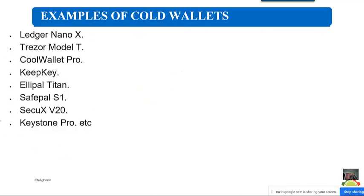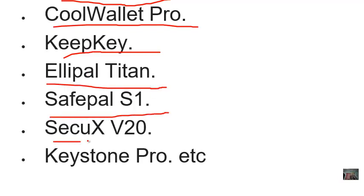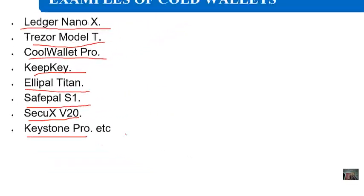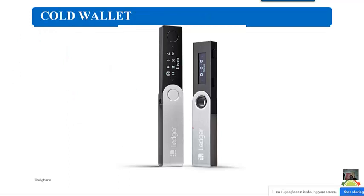Cold wallets can sometimes cost upwards of $200, though there are cheaper options too. Examples of cold wallets include the Ledger Nano X, Trezor Model T, CoolWallet Pro, KeyPay, Ellipal Titan, SafePal S1, SecuX V20, and Keystone Pro, among others. A hardware wallet looks like a pen drive — you connect it to your laptop, connect to the blockchain or crypto site, make your transactions, then disconnect it.